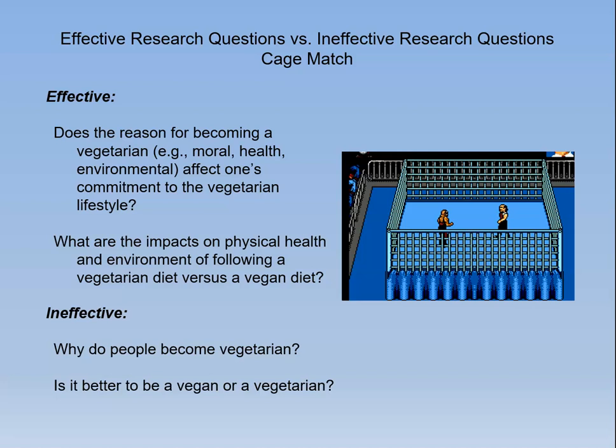Let's take a look at the difference between effective and ineffective specific theses. With the question 'why do people become vegetarian?' you're likely to get as many answers as there are vegetarians. Make the question more specific by asking if the reason for becoming vegetarian has an impact on a person's commitment to vegetarianism.